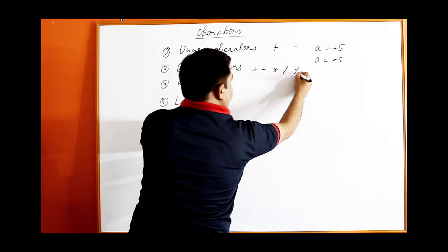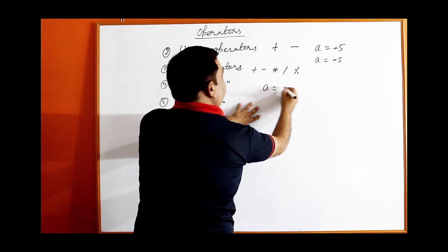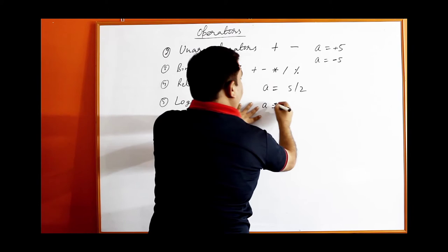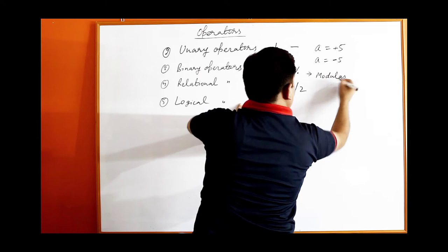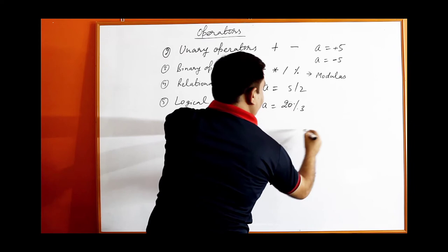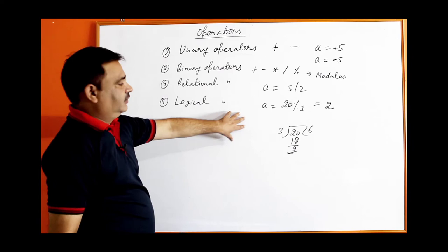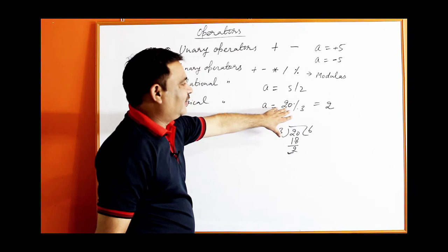The binary operators are: plus to add values, minus to subtract, star to multiply, and slash to divide. The percent sign is called the modulus or remainder operator. For example, 20 modulus 3 gives 2, because 20 divided by 3 is 6 remainder 2. So the modulus operator is used to calculate the remainder. Binary operators take two operands.